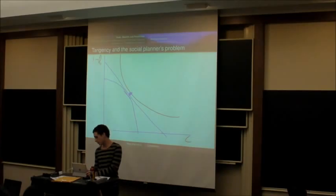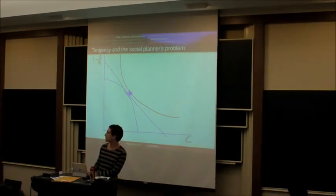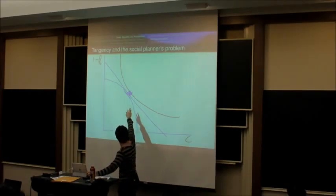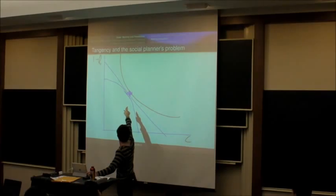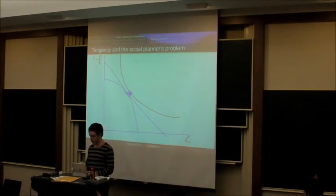The optimal point from society's perspective is where these two things are tangent to one another, but that's exactly what the market does. It forces everyone to set everything tangent to the prices. So all the marginal rates of transformation are set tangent to the prices, and all the marginal rates of substitution are set tangent to the prices.